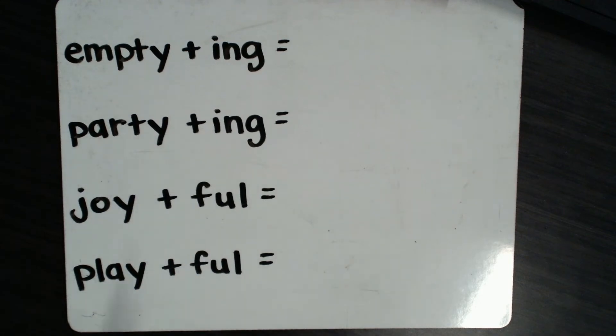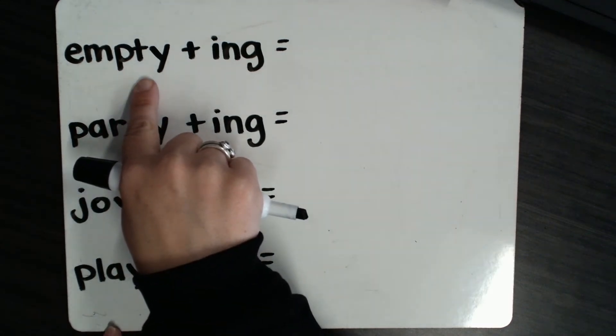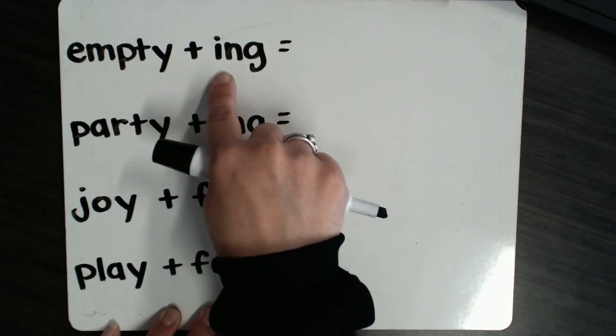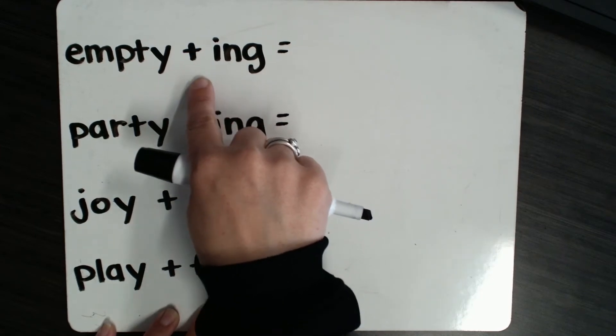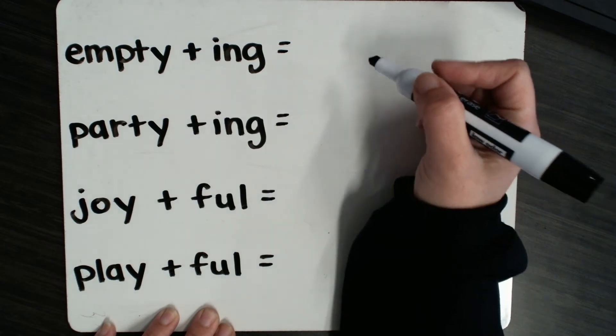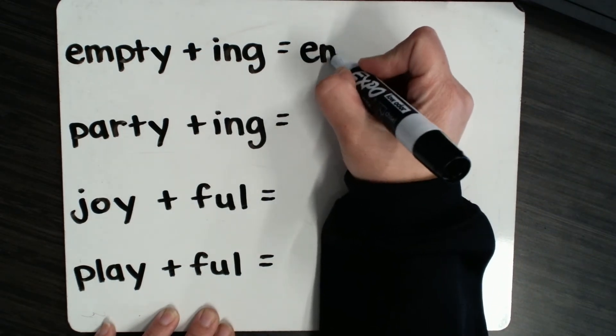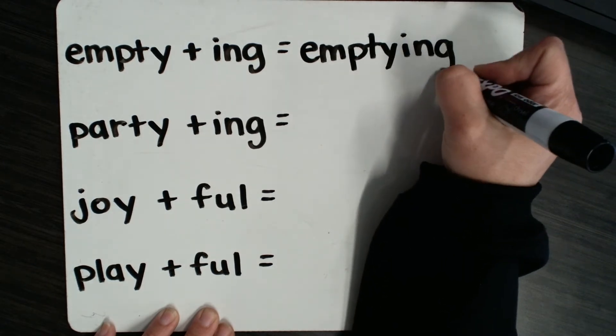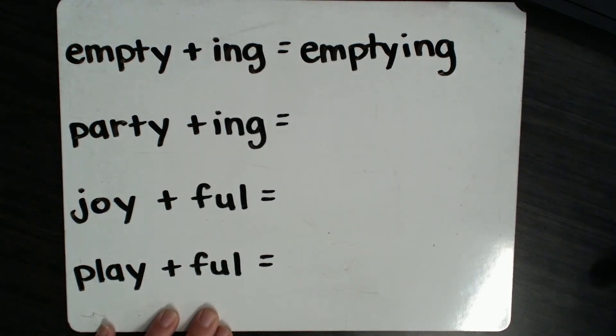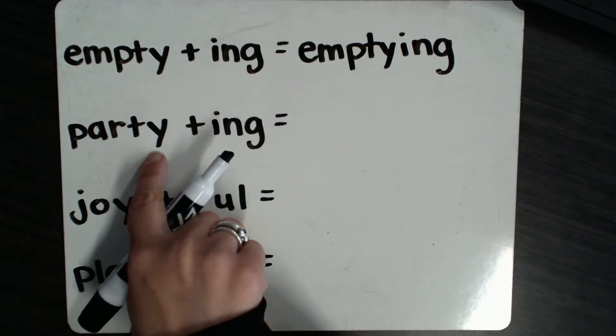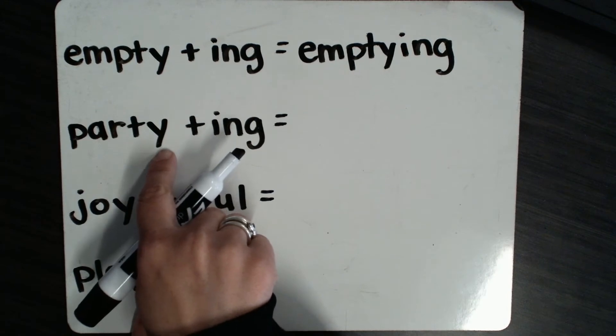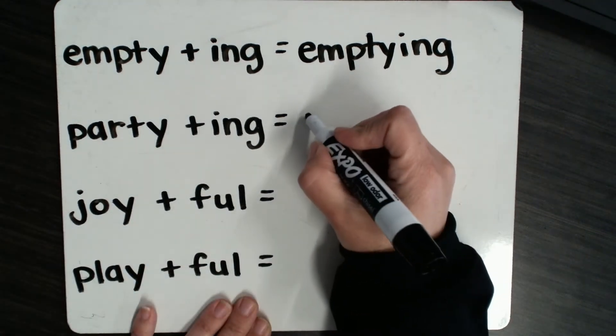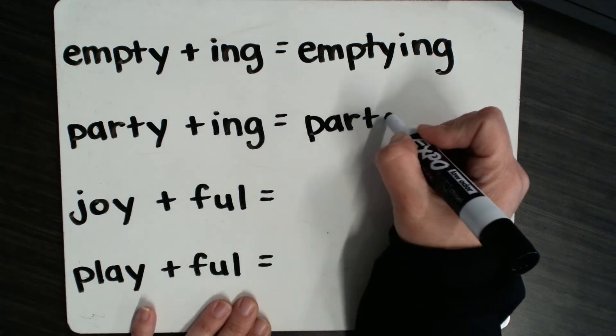Okay, I want to look at these words. In these words, we have a root word that has y right after a consonant, but we're adding a suffix that begins with i. So for these words, we do not change the y to i. This will look like emptying, no change. No change when the suffix begins with i. Same for the next one. We do have a root word ending in y that comes after a consonant, but our suffix begins with i, so we're not going to change that y. We have partying.